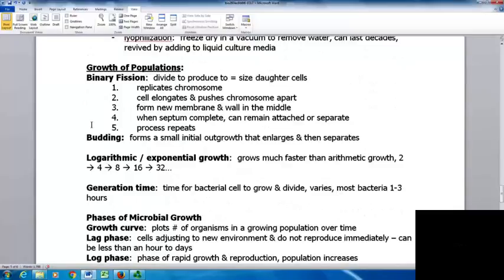Looking at growth of populations, bacteria do binary fission - dividing to produce equal-sized daughter cells. This is fairly simple. It starts with replicating the chromosome. The cell begins to elongate and push chromosomes apart. It forms new membrane and wall in the middle. When that septum is complete, you have two new cells that can remain attached or separate, then it repeats this process. With budding, you form a small initial outgrowth that enlarges and then separates.